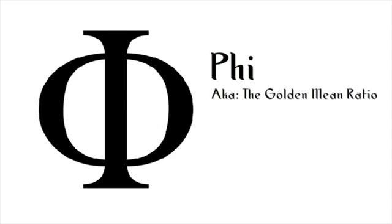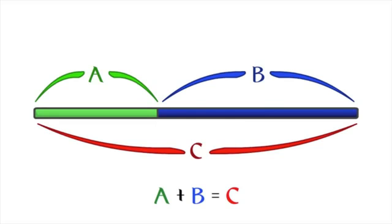Phi, also known as the golden ratio or golden mean, is a very simple relationship. If you had a rod and were going to put a mark on it, only two places would mark the phi ratio, which is here or here. The length of A plus B is equal to the length of C. This ratio is 1.6180339 and continues on forever.